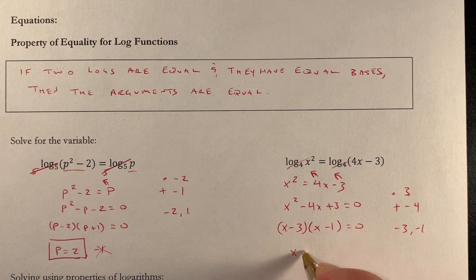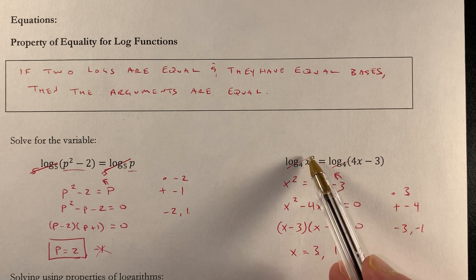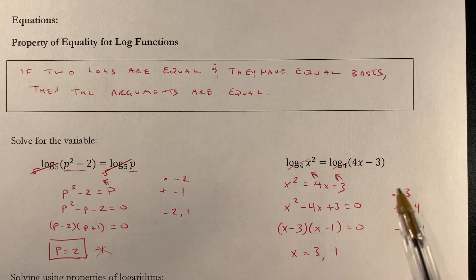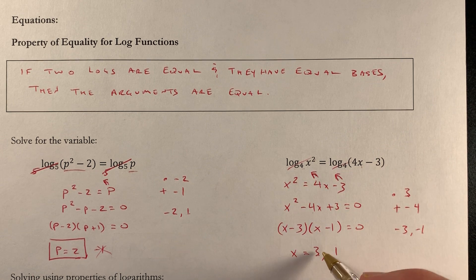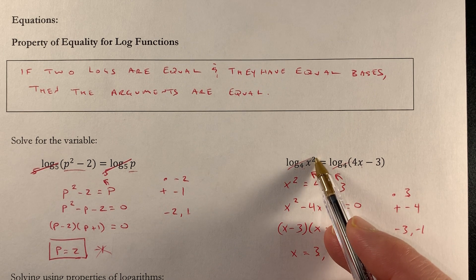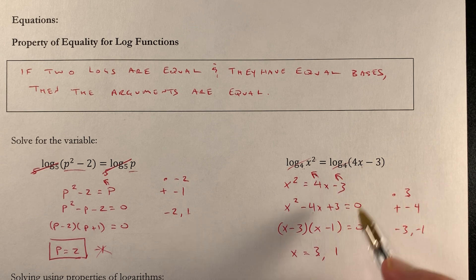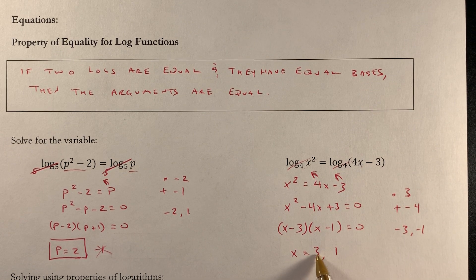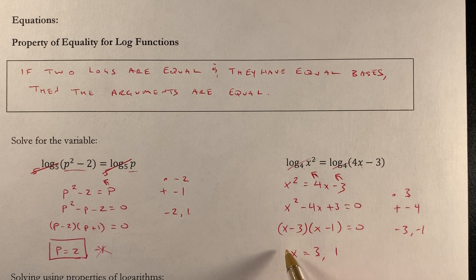My two solutions are x equals 3 and x equals 1. Plugging in 3: 3 squared is 9, which is positive, and 4 times 3 is 12 minus 3 is 9, also positive — so 3 checks out. Plugging in 1: 1 squared is 1, which is positive, and 4 times 1 is 4 minus 3 is 1, also positive. So both x equals 3 and x equals 1 give positive arguments on both sides, and I get to keep both solutions.